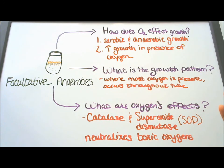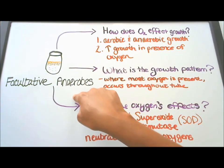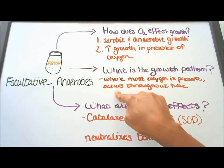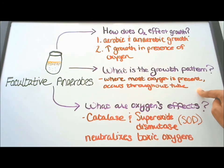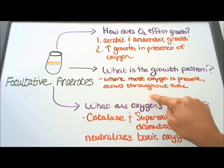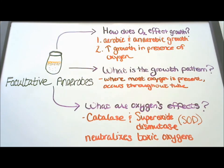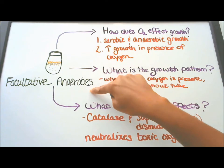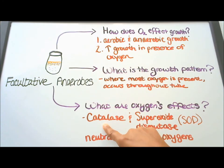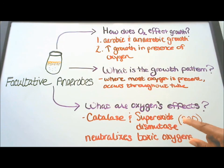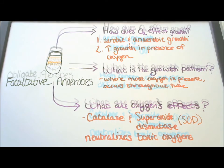Question number two: what is the growth pattern for facultative anaerobes? Well, growth occurs where most oxygen is present, but it can also occur throughout the tube where oxygen is not present. Question number three: what are oxygen's effects? These microbes create enzymes called catalase or superoxide dismutase, or SOD for short, and these enzymes neutralize toxic oxygens.